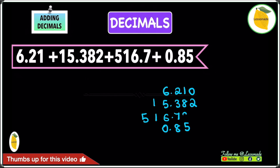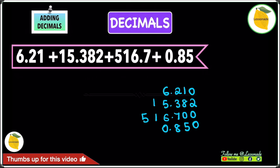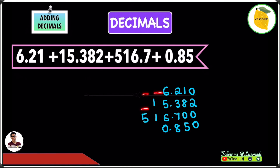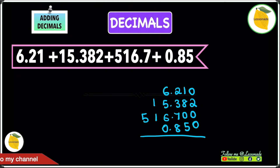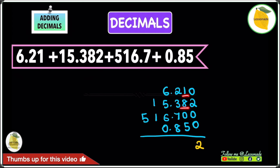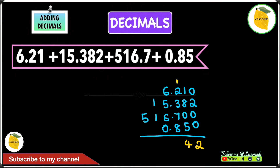We fill any spaces with zeros because adding a zero to a decimal does not change its value. So now: 0 plus 2 plus 0 plus 0 is 2. Next: 1 plus 8 is 9, 9 plus 0 is 9, and 9 plus 5 is 14 — write 4, carry 1.